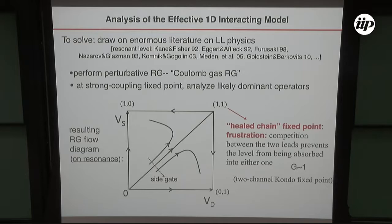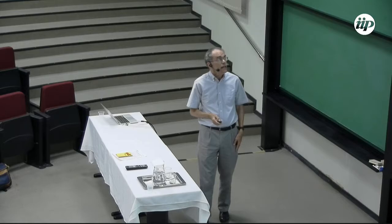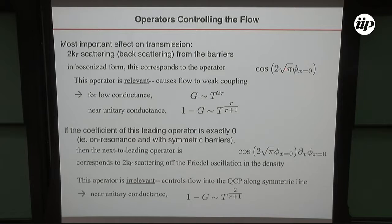The approach to those fixed points will be controlled by the scaling dimension of the operators around them, and because so much is known about them I know what these operators are. Physically, the most important effect on transmission is 2kF backscattering — an electron comes in at the Fermi momentum going one way, it goes out the other way, and that's the biggest effect on the current. That operator in bosonized form looks like a cosine times one of the phases, and from the scaling dimension you get a prediction for what the conductance should do. If I'm tuned to resonance and symmetry so that the coefficient of that operator is exactly zero, then I need to go to the next operator, which has a corresponding prediction for the conductance.